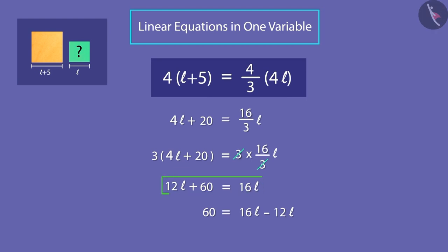So when we move 12L to the right side of the equation, we can subtract it from 16L because they are like terms. Now we get an equation of a known form. Finally, we got the variables on one side and constants on the other.